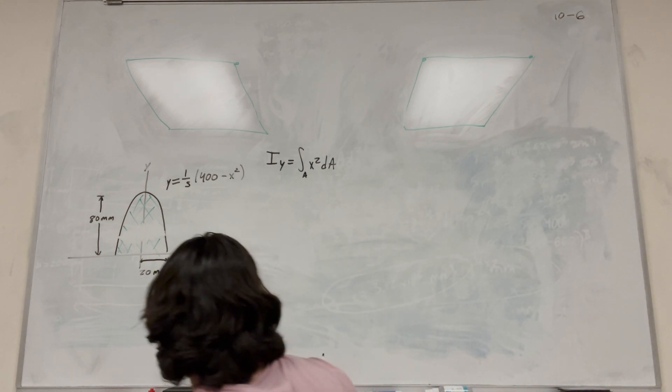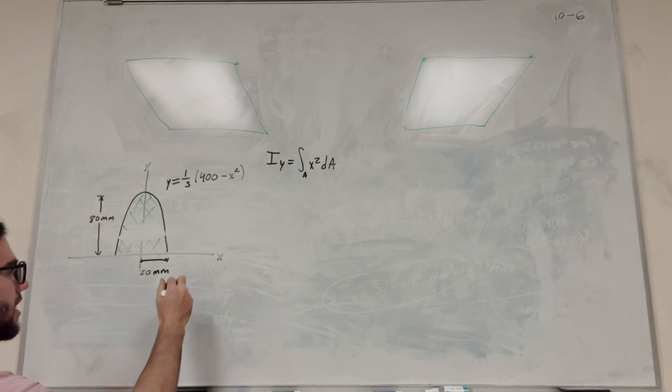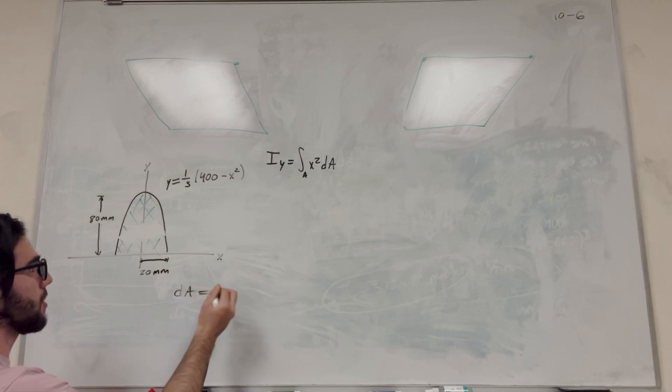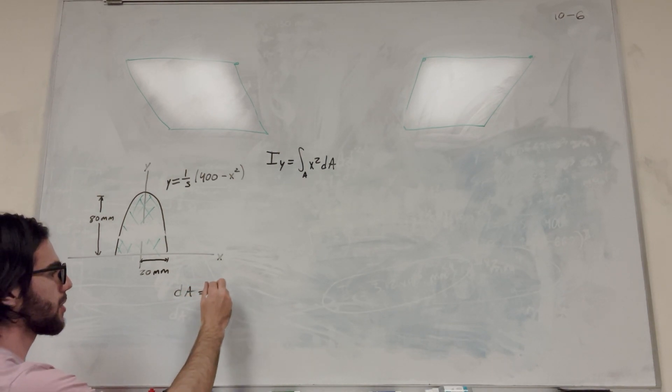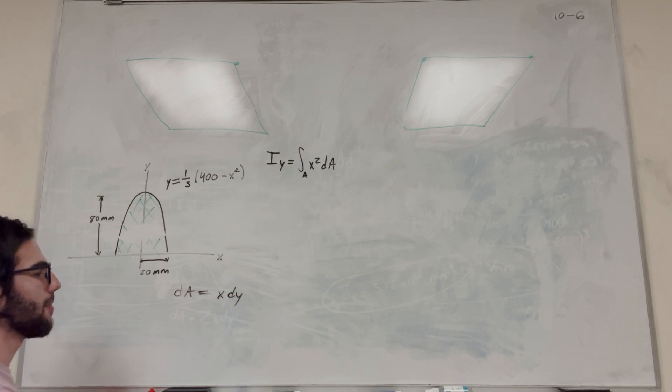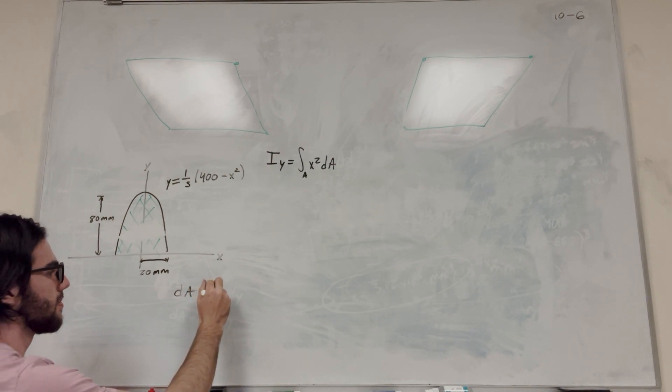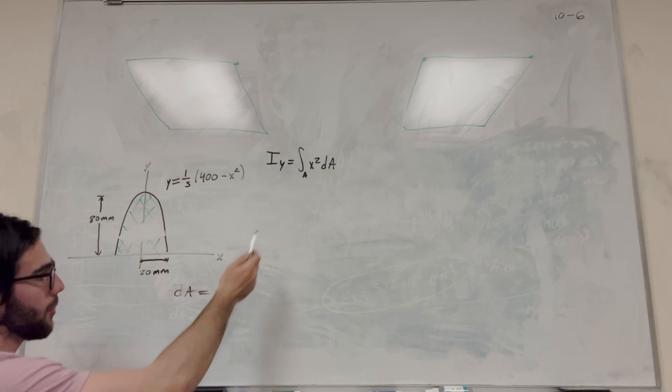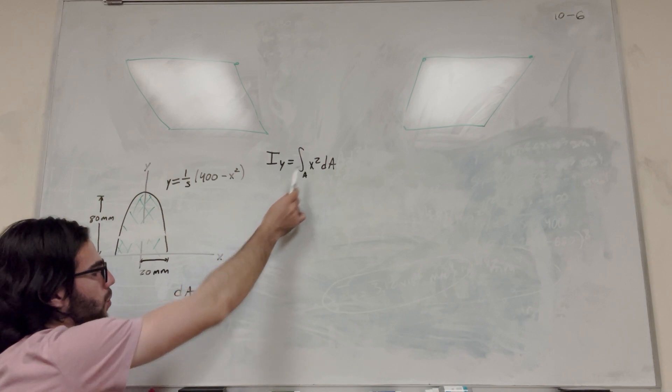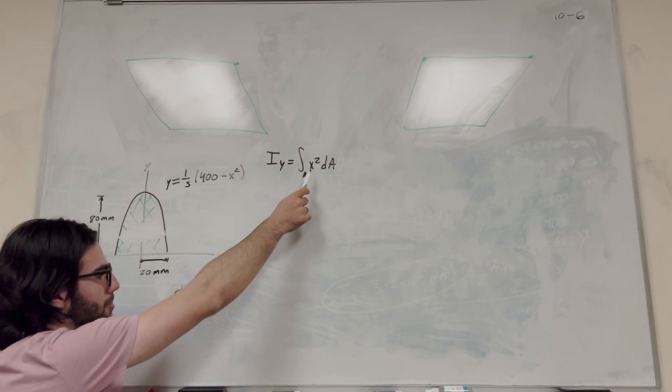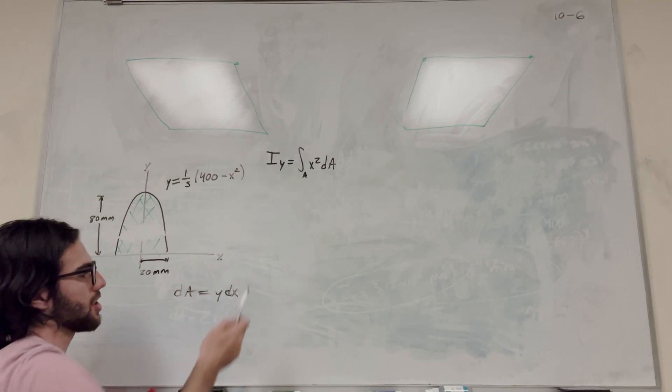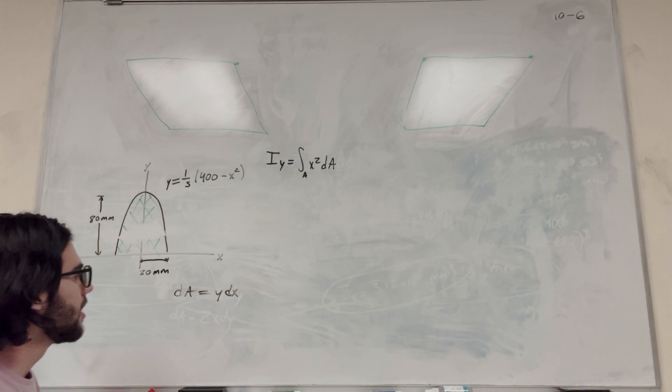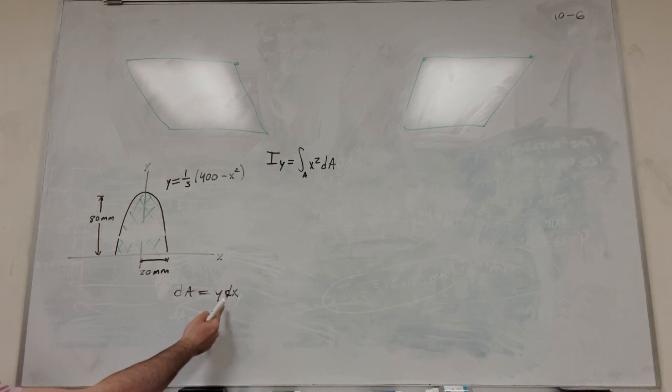So dA, generally in calculus, dA is either equal to x dy or y dx. In this case, we're going to do x dy... actually, we don't want x dy. We want y dx. Why do we want y dx? Well, we have this x squared here. If we do y dx, it's going to be a little simpler because it's just going to work out. So we have y dx here. So let's figure out what each one of these are.